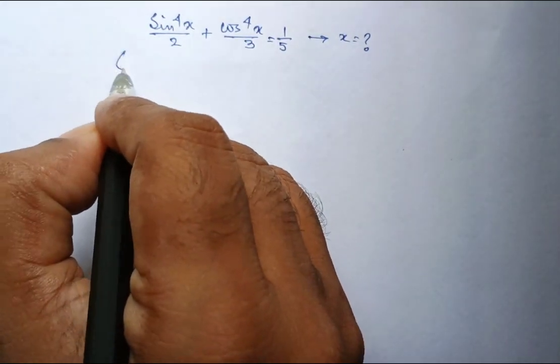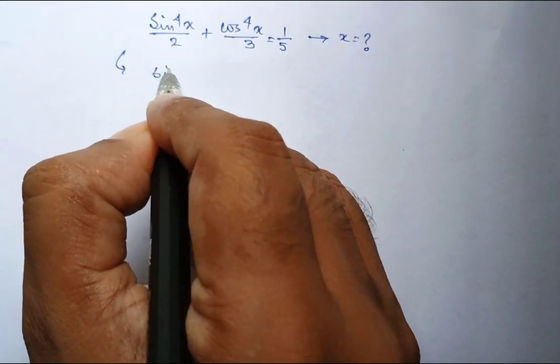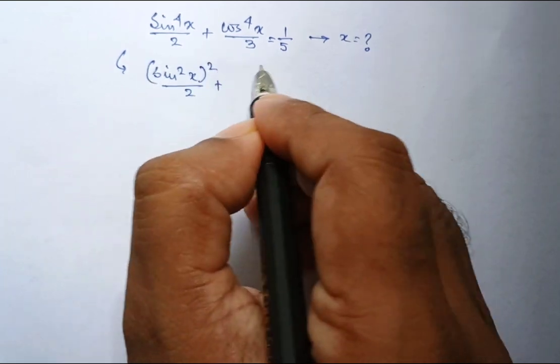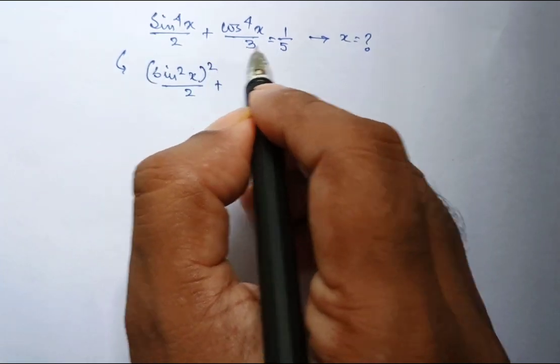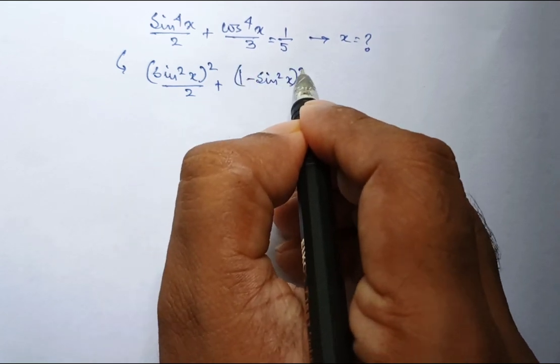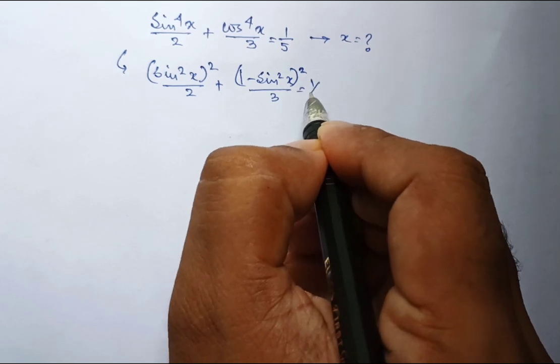Start with this problem. I am writing it as sin square x whole square divided by 2 plus cos square x whole square, that is 1 minus sin square x whole square, divided by 3 equal to 1 by 5.